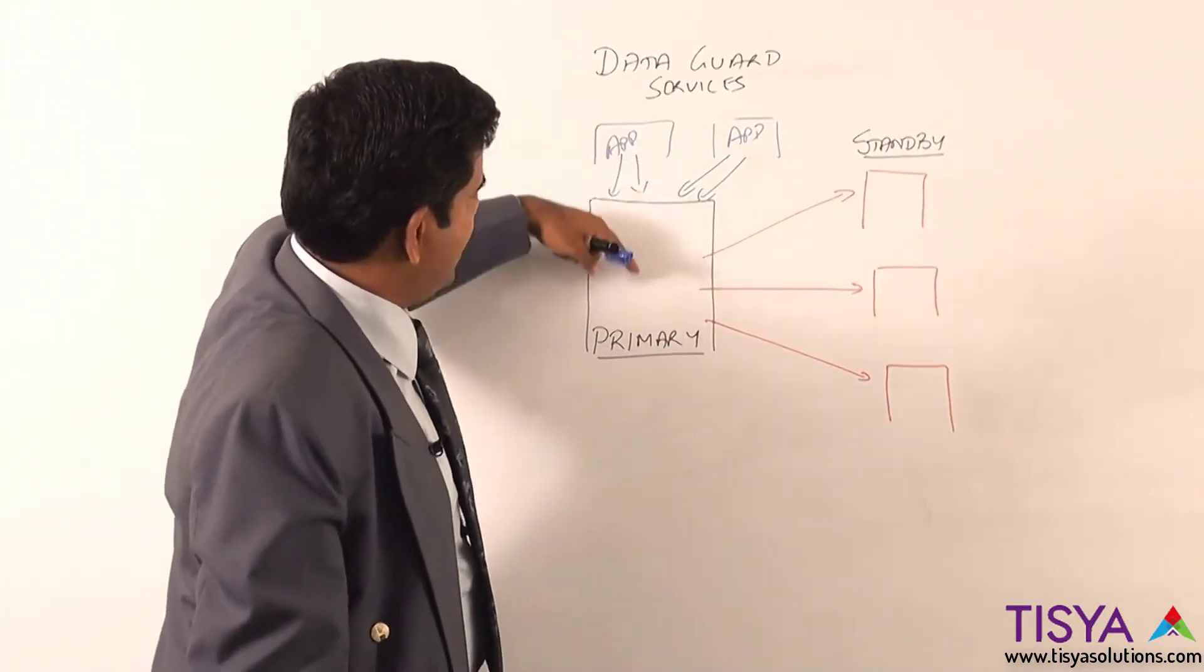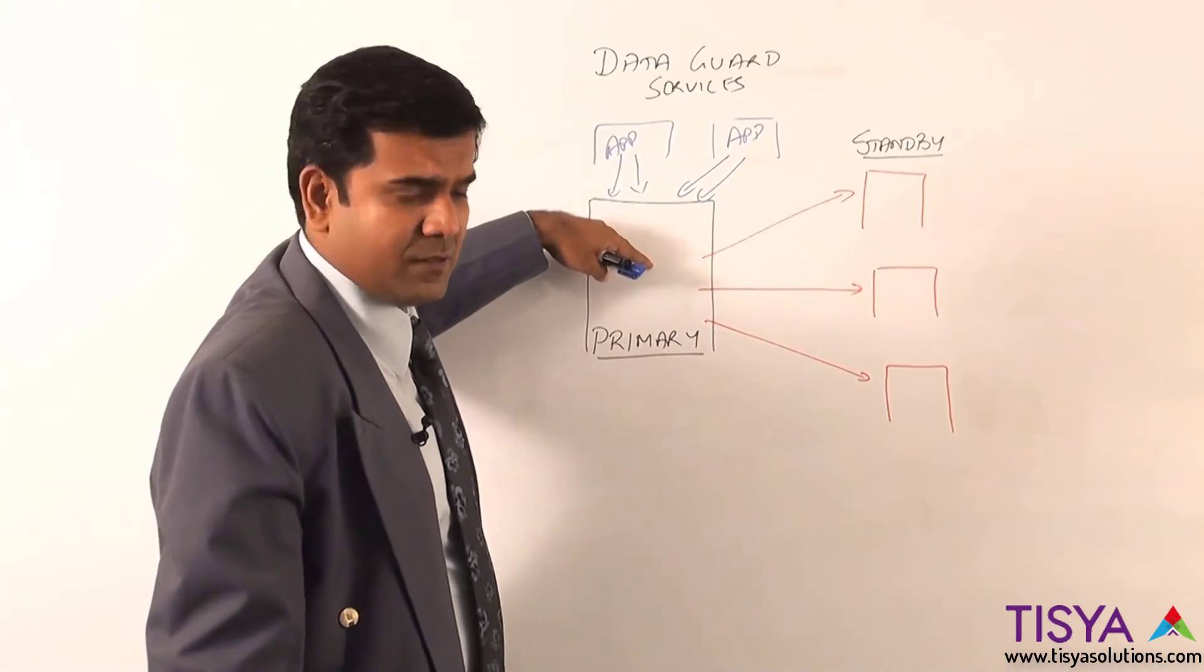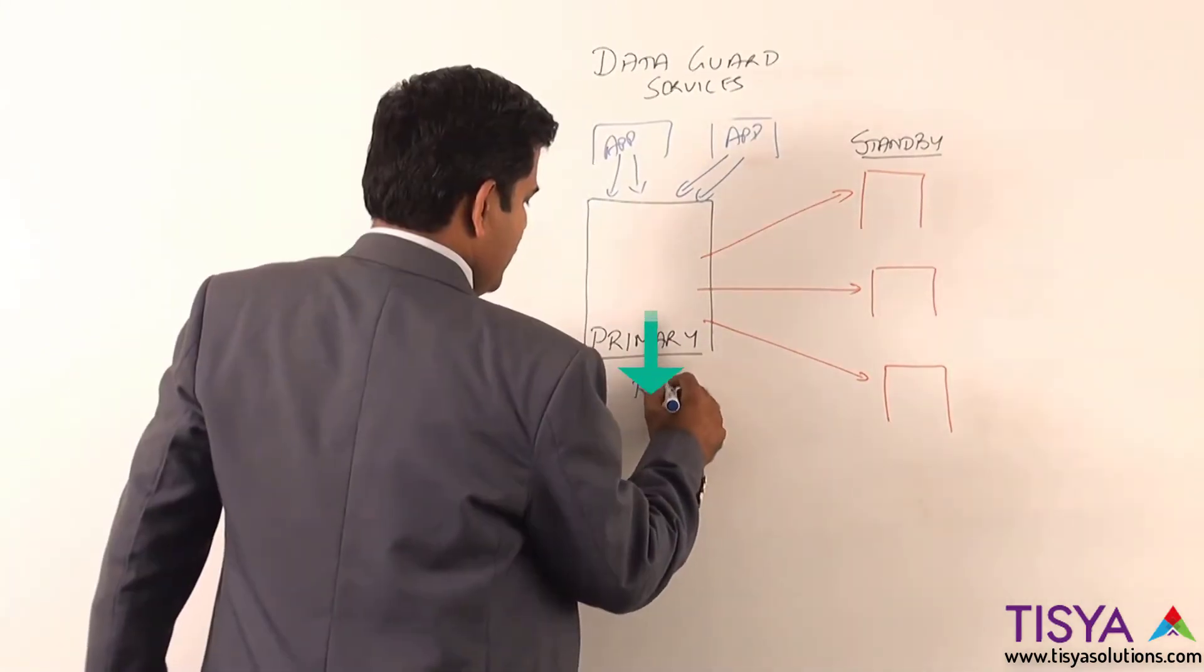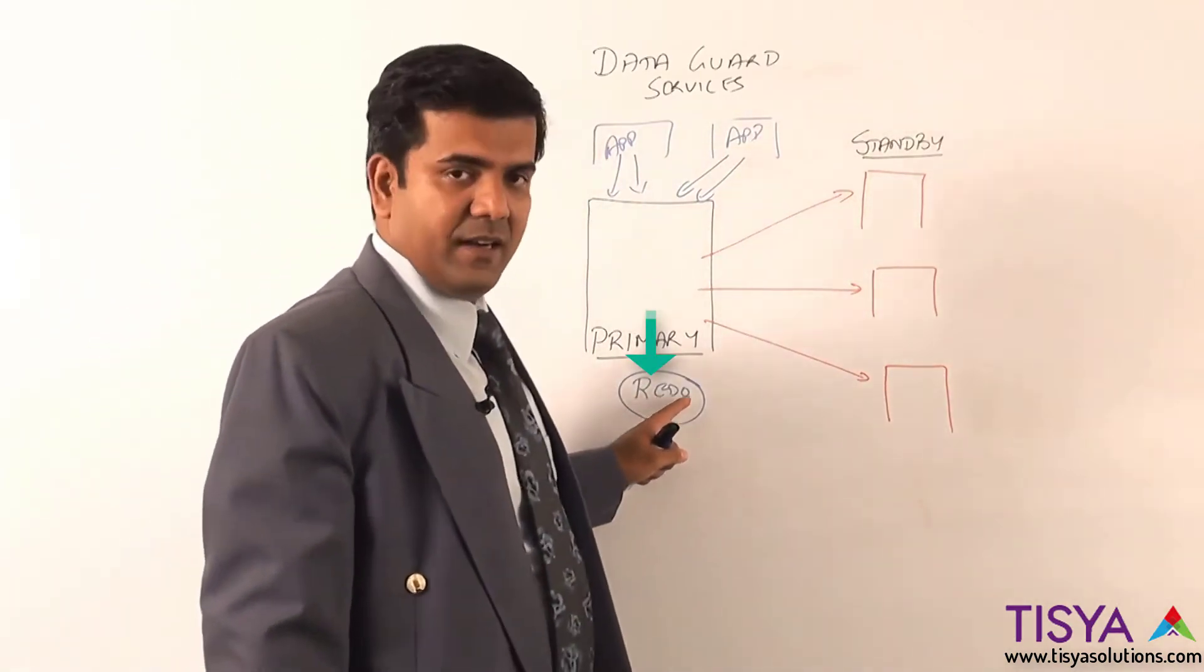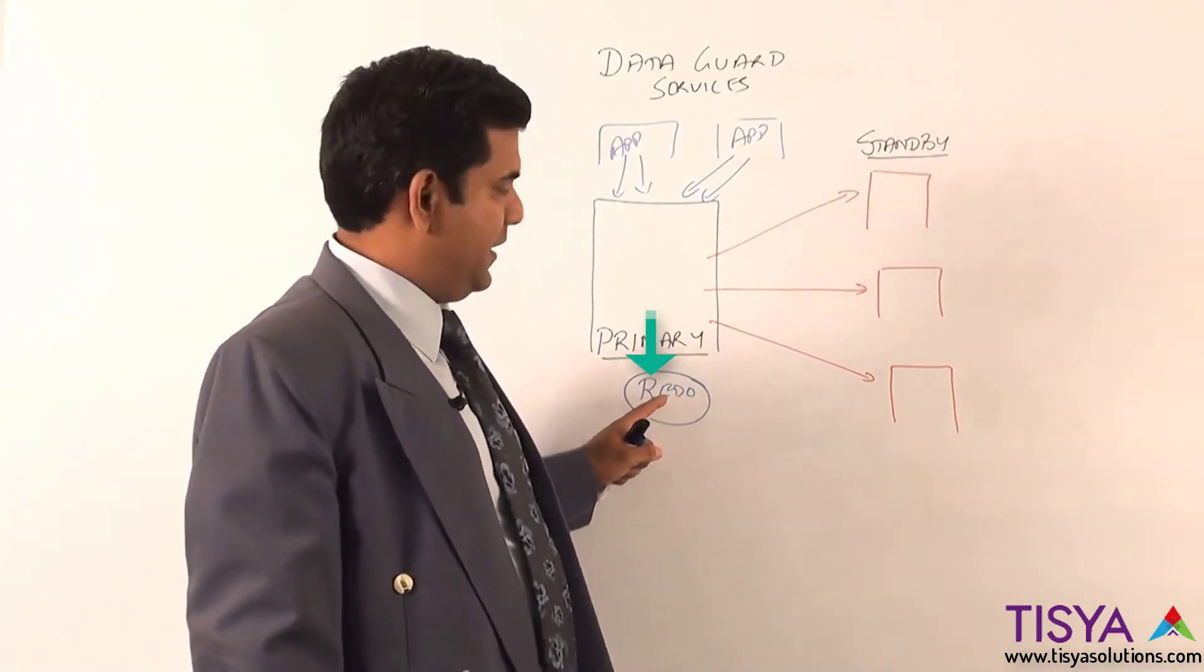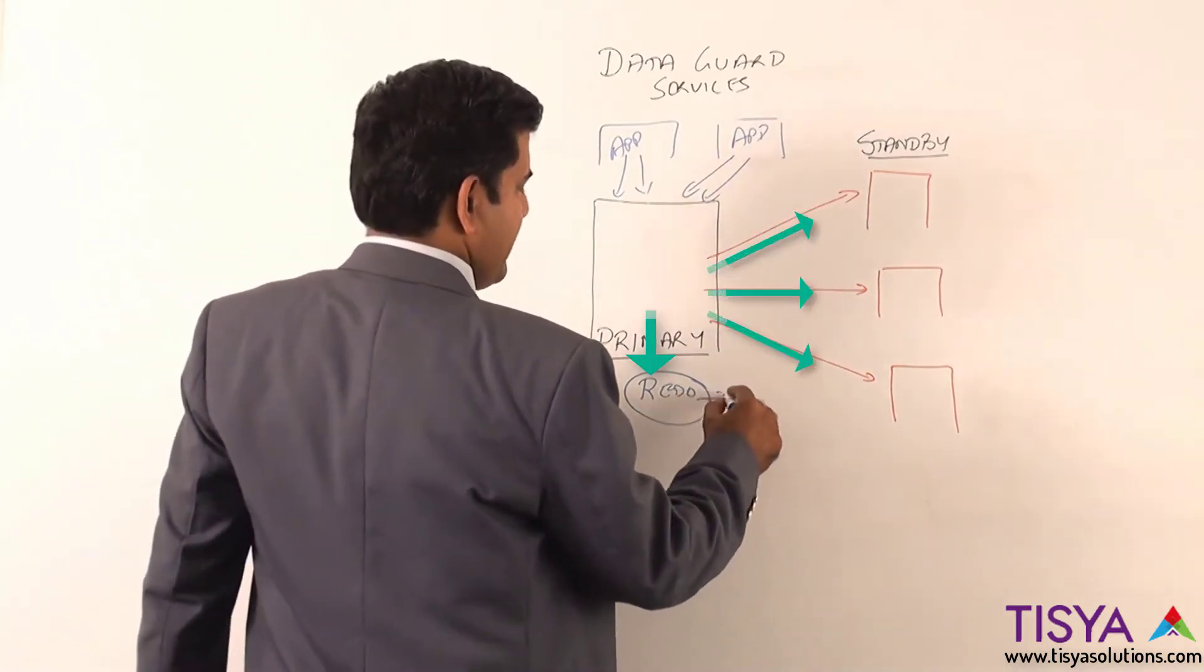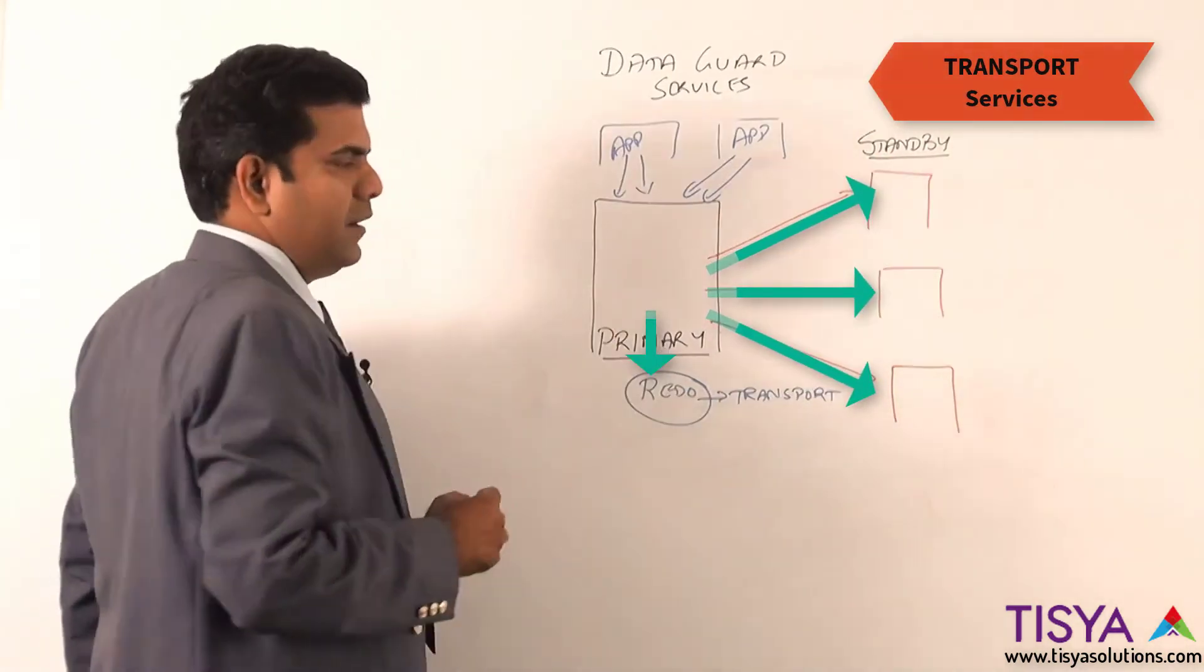The first thing is about, as and when an application is connected to the primary and performing transactions on the primary, redo is going to get generated. As the redo logs get generated in a Data Guard configuration, we need to ship them, transport the redo log to the standby databases. So the first service that we need to take care is transporting redo.